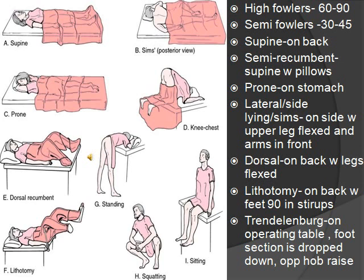Semi-recumbent is supine with pillows, used after abdominal surgery or abdominal distension. Prone is on the stomach, used to relieve pressure off the back, for someone with a burn on their back, or to help them sleep.